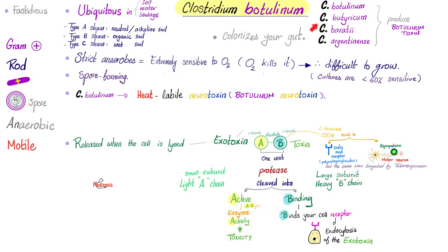We have four types of bacteria that produce the botulinum neurotoxin, the most famous of which is Clostridium botulinum. But botulinum toxin is not unique to Clostridium botulinum — other Clostridia can release it too, such as Clostridium butyricum, Clostridium baratii, and Clostridium argentinense. Incidentally, 'argentinense' relates to silver — hence the argentaffin stain used in labs, and argentaffin cells that take up the silver stain.